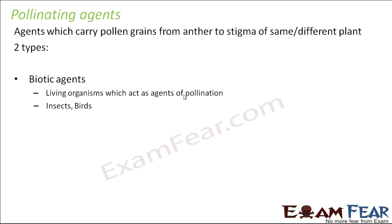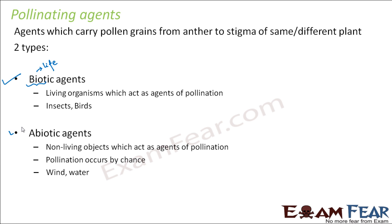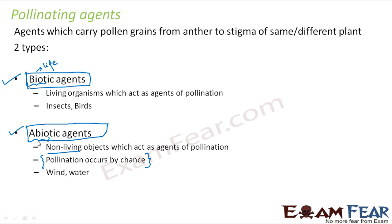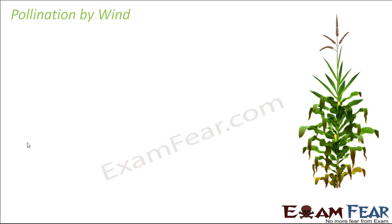Pollinating agents are broadly classified as biotic agents and abiotic agents. Biotic agents are living organisms that act as agents of pollination — for example, insects and birds. Abiotic agents are non-living objects that act as agents of pollination — for example, wind and water. In the case of abiotic agents, pollination happens by chance, because wind or water is not under our control. Whenever there is wind, pollination will take place.